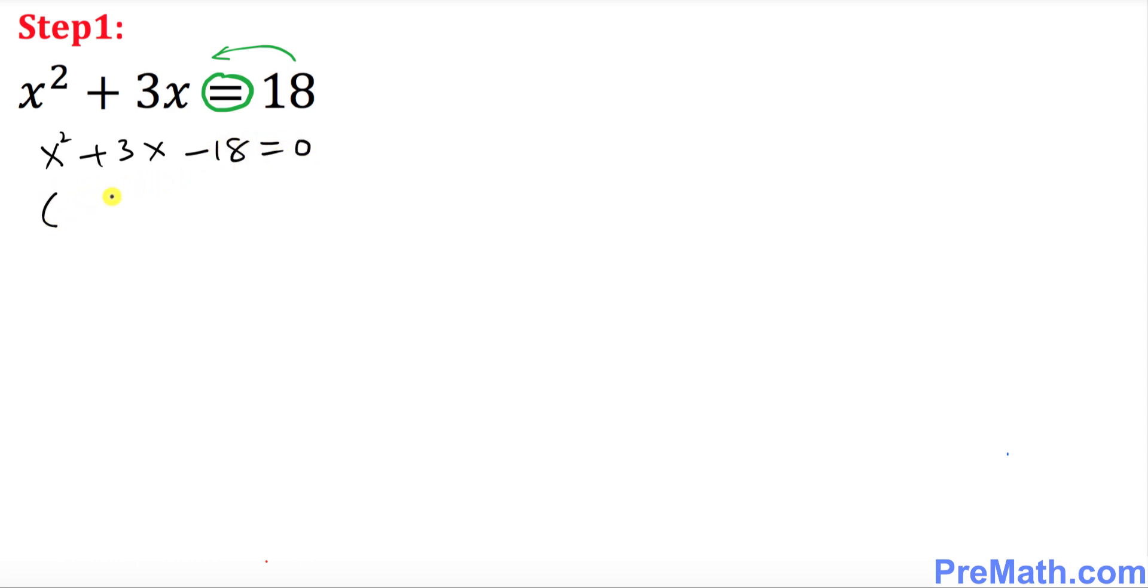Now this can be easily factored out. So let's go ahead and factor it. One of the factors is going to be x plus 6 and the other factor is x minus 3. So let's go ahead and split them up.